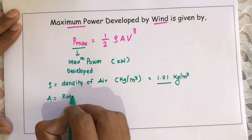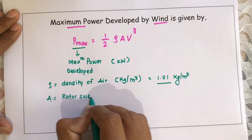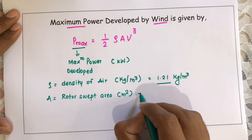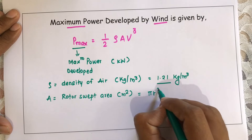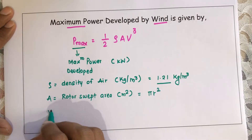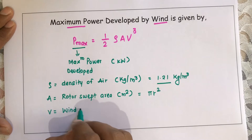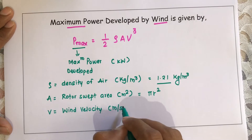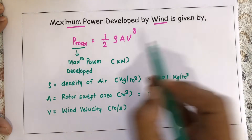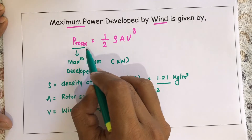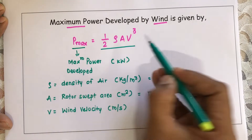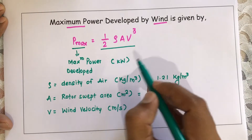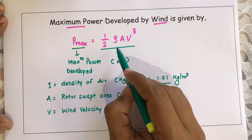A is the rotor swept area, with units of meter square and formula pi r square. V is the wind velocity, with units of meter per second. So the formula for maximum power developed is P_max = ½ρA·V³.